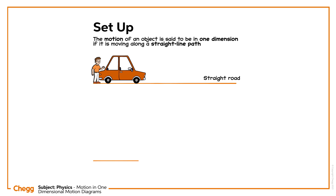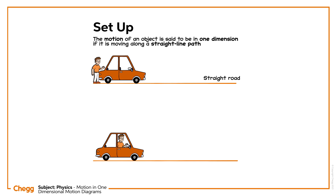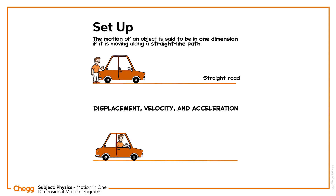The basic terms that are used to describe the motion of the car are displacement, velocity, and acceleration. Now let's define these terms.